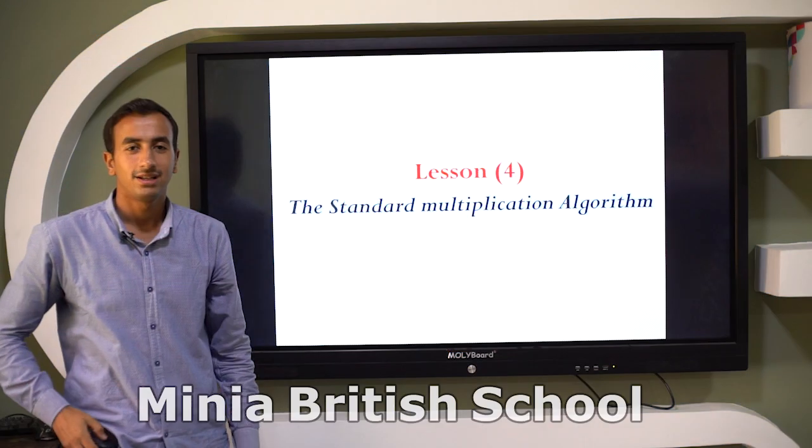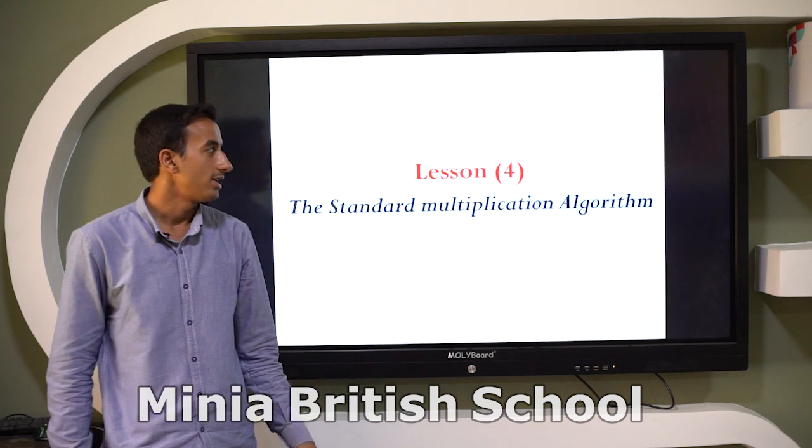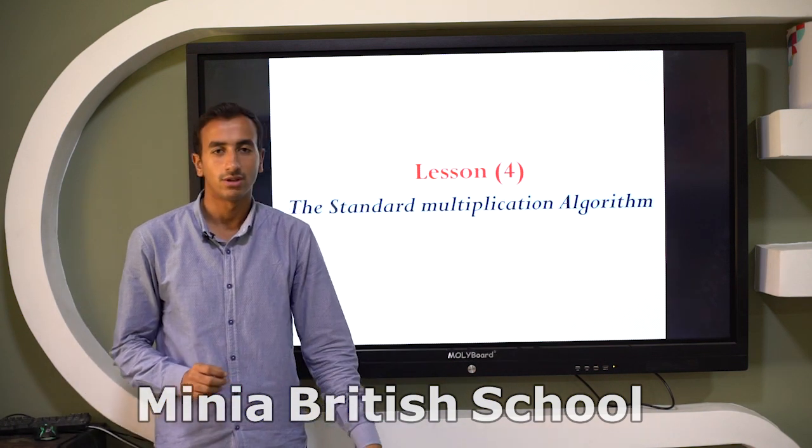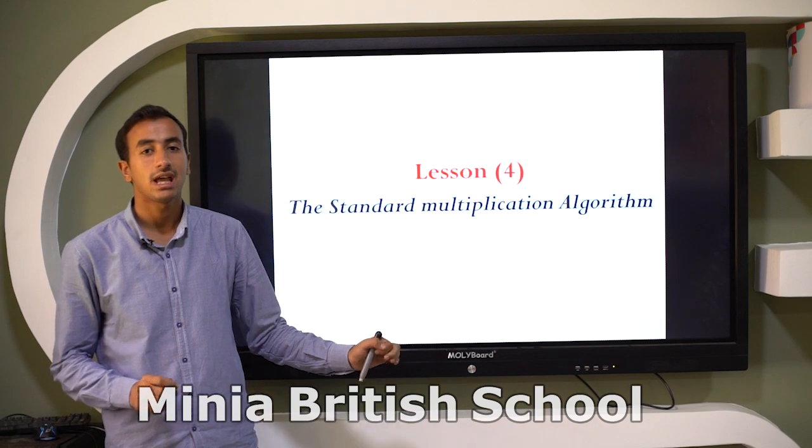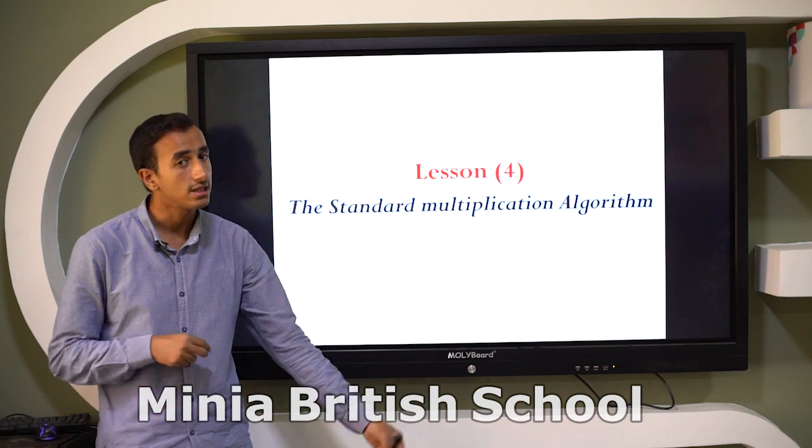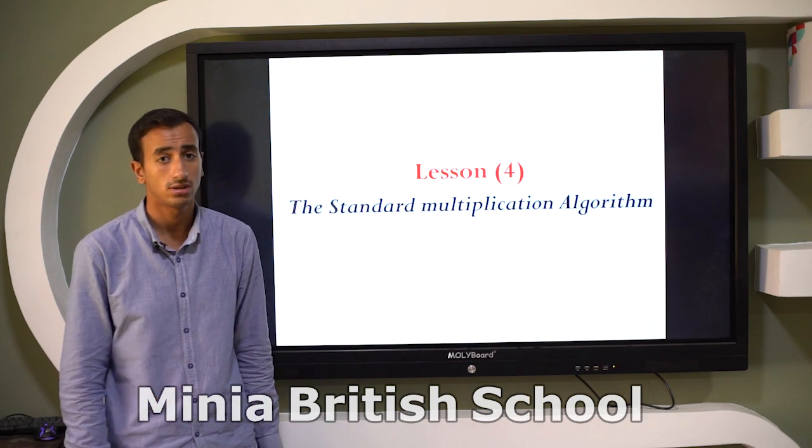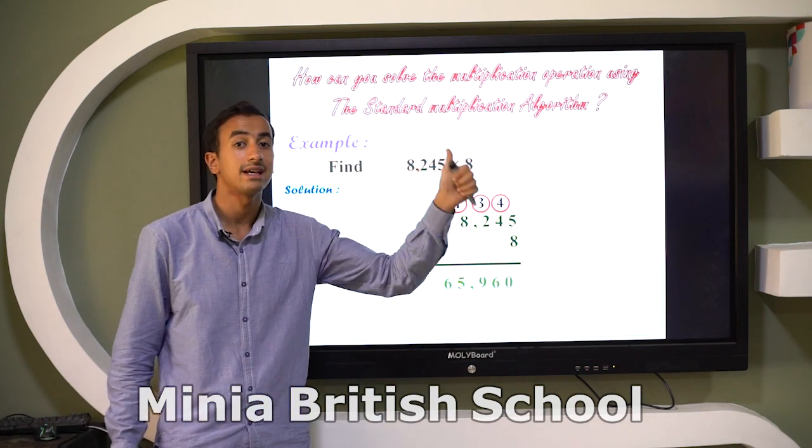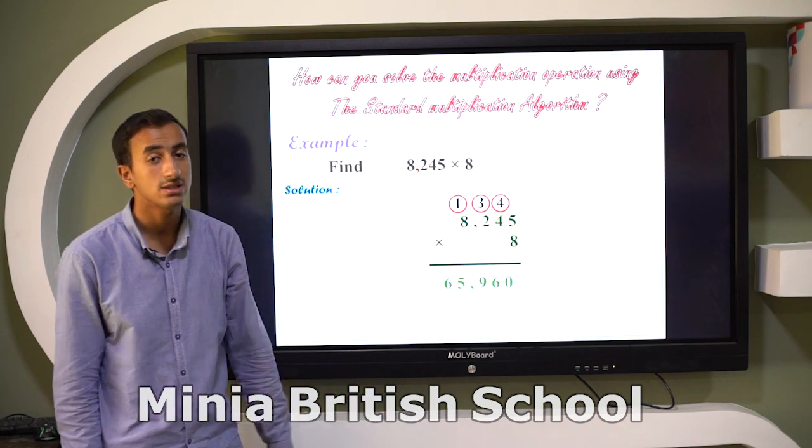Hello Grade 4! Today let's study together Lesson 4 in Unit 7: The Standard Multiplication Algorithm. That's the last strategy and the fourth strategy to multiply two-digit by one-digit, or three-digit by one-digit, or four-digit by one-digit. Let's see together how to multiply 8,245, the same example of the previous lesson, Lesson 3, times 8.